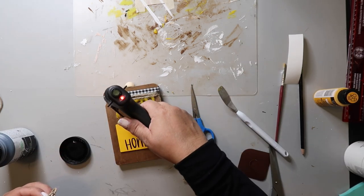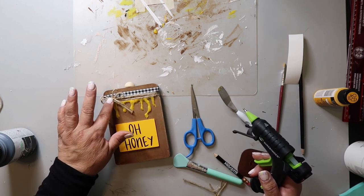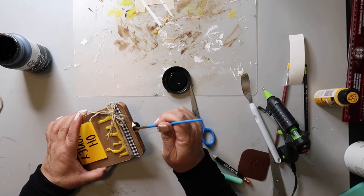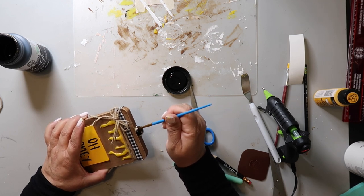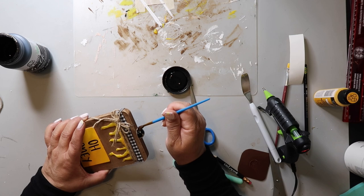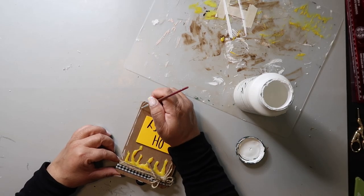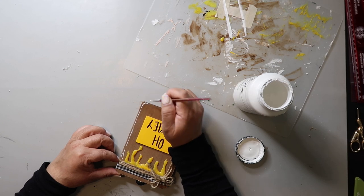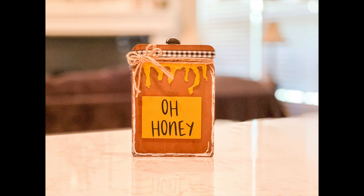And I add a jute twine bow to the corner, of course, because it's me and I like jute twine bows. And then I painted the little bead at the top black. And to give this sign a little bit of embellishment, I'm adding some white lines around the outside. And this is how it turned out. My little Oh honey sign is super cute. Don't you think?